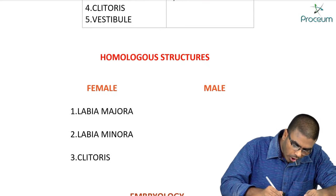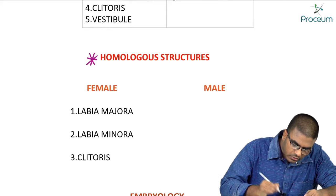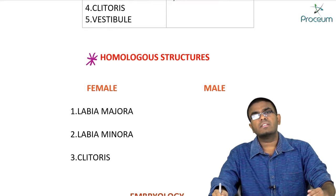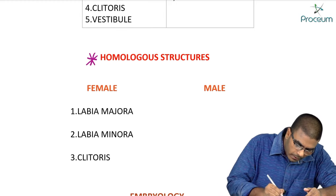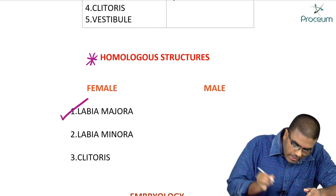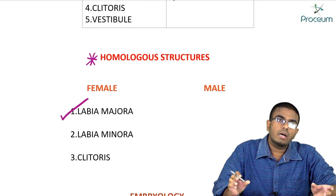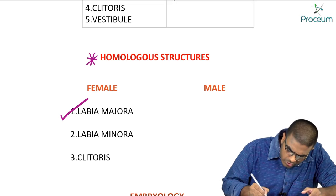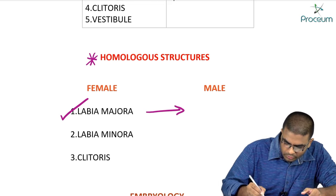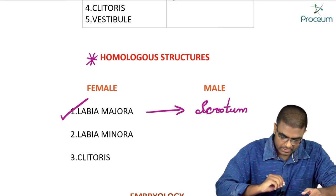Let's discuss homologous structures. Homologous structures are similar structures in their counterparts. For example, labia majora in a female is homologous to the scrotum in males.